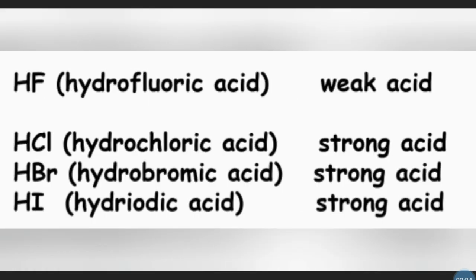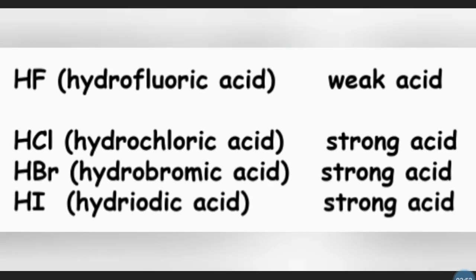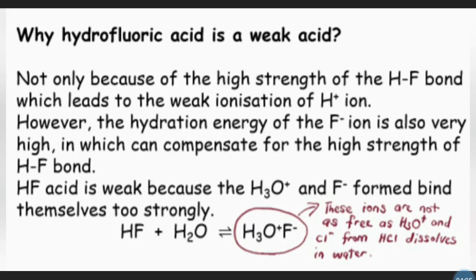We can also use the same reasoning to explain the acidity of the hydrohalic acids. When hydrogen fluoride dissolves in water, hydrofluoric acid is produced. When hydrogen chloride dissolves in water, hydrochloric acid is produced. The same goes for hydrogen bromide and hydrogen iodide, producing hydrobromic acid and hydroiodic acid. With the exception of hydrofluoric acid, which is a weak acid, hydrochloric acid, hydrobromic acid, and hydroiodic acid are all strong acids.